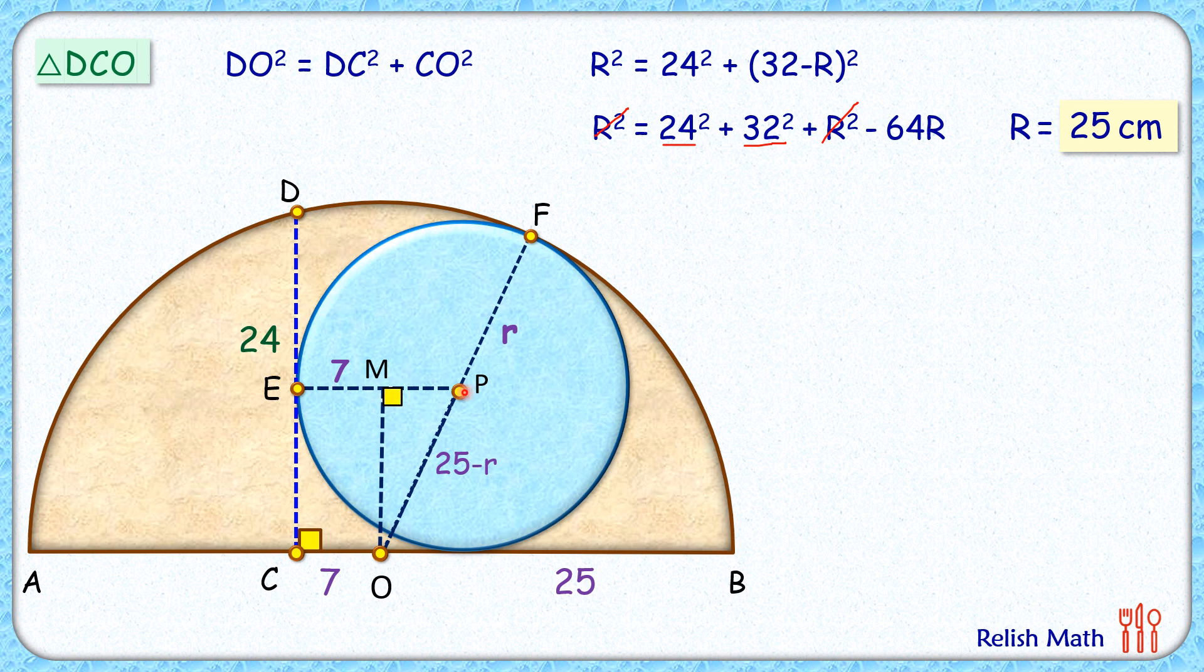Now full length PE is small r, so PM will be r minus 7. And from P, this distance here is radius of the circle, and thus MO will be the same radius of the circle, that's small r.